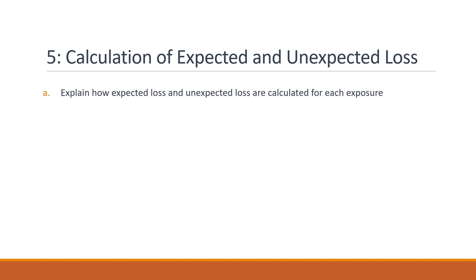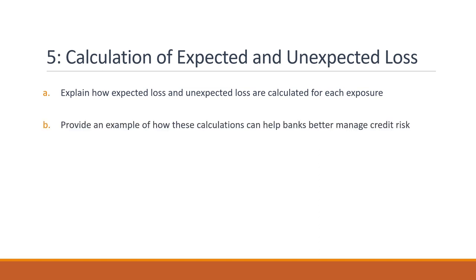These calculations help banks better manage credit risk and set aside appropriate levels of capital. Let's say a bank has a portfolio of loans, each with a different credit rating. The bank uses the IRB approach to assess the credit risk of each loan and assigns them a risk weight based on their credit rating. The bank then calculates the total risk-weighted assets, RWA, for the portfolio using the formula outlined in Chapter 5 of the Capital Adequacy Requirement 2023 for Canada Banks. By doing this, the bank is able to determine the amount of capital it needs to hold in order to absorb potential losses from the portfolio.